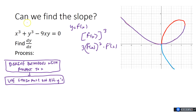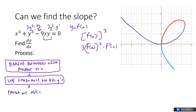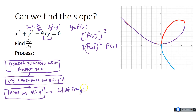I use y prime notation; some use dy/dx — either is fine. So you'd have 3y² times y prime, for example. Step three: factor out all the y primes — get them all on one side. Step four: solve for y prime. That's the whole process every time.